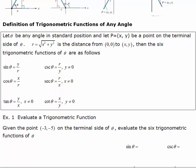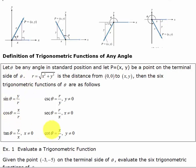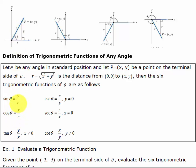If you ever forget this definition, you can always refer back to SOHCAHTOA by drawing your angle and drawing that line perpendicular to the x-axis. Here's theta — y is the side opposite, so you'd have opposite over hypotenuse, giving you y over r. Cosine is adjacent over hypotenuse, giving you x over r. And tangent is y over x. The reciprocal functions remain the same — just take the reciprocal of the original.